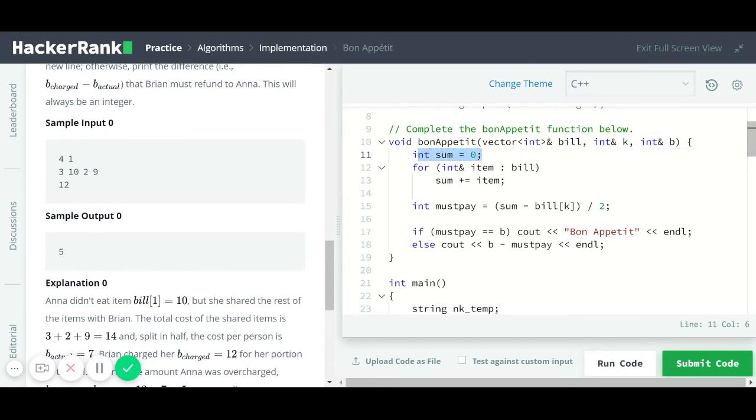So in the implementation here, in the definition for that function, I have an integer variable called sum that I'm initializing to 0 to avoid having a garbage value by default. And then I'm looping through the dynamic array. I'm accessing every item by reference on the bill. And then I am just summing up all of them to get the total.